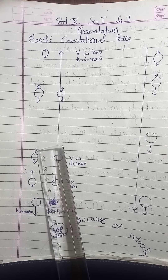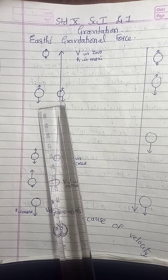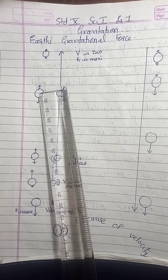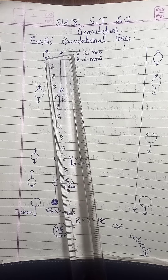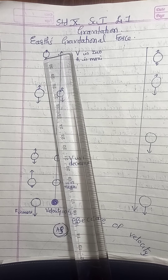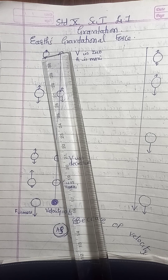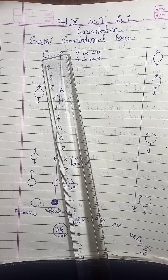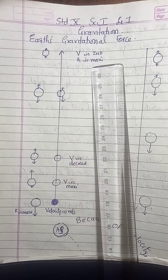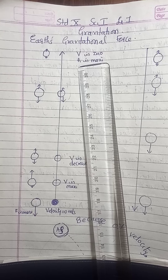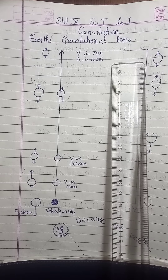Initially the upward direction force is more and the downward direction force is less. But as it goes up, the upward force keeps decreasing and the downward force keeps increasing. A stage comes when both upward and downward forces balance, and the velocity becomes zero for a fraction of a second. Now, the gravitational force is more than the applied force, and as a result the object starts moving in the downward direction.